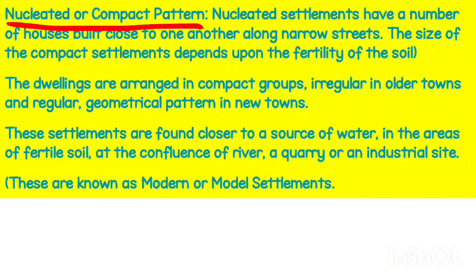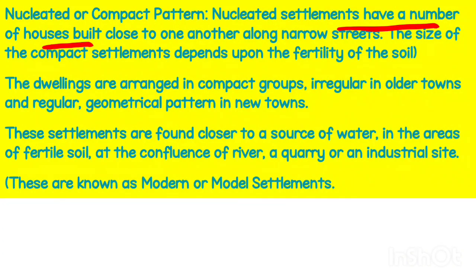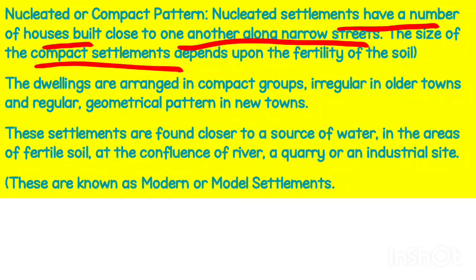A nucleated settlement has a number of houses built close to each other along a narrow street or the bank of a river. Another name for nucleated settlement is compact settlement. These settlements are basically found on highly fertile areas — if the land is very productive, people are concentrated in that place.